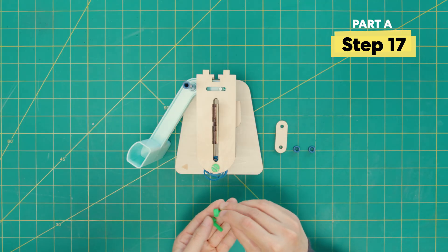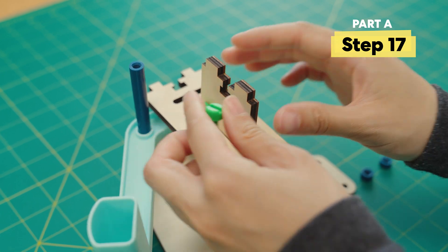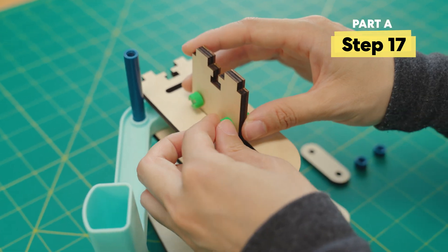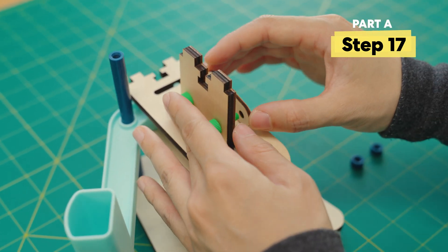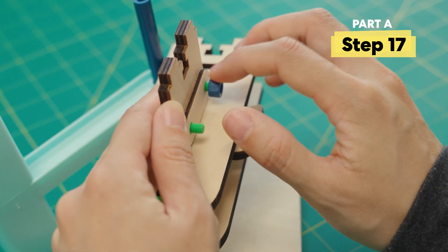Now let's attach these two green bolts here. And then put on this little pill-shaped wooden piece. Twist on the two nuts.